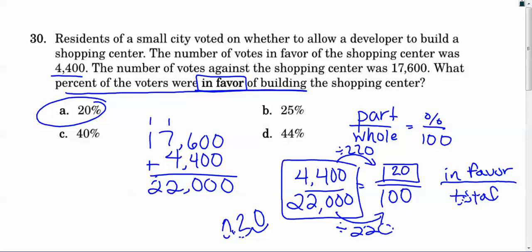Just kind of looking at those numbers, you probably could have eliminated C and D immediately because that's pretty darn close to 50%. And you can see that 4,000 is not 50% of 17,000. I know I'm doing some rounding there, but common sense should tell you that those are probably not our answer, but we're going to do the math to be sure.